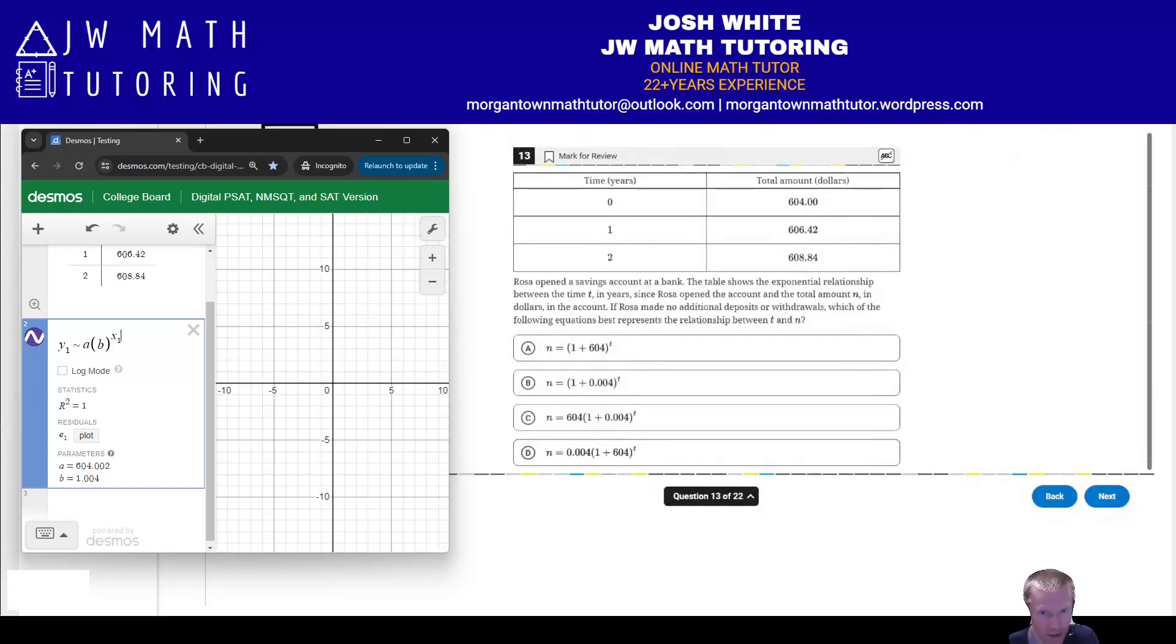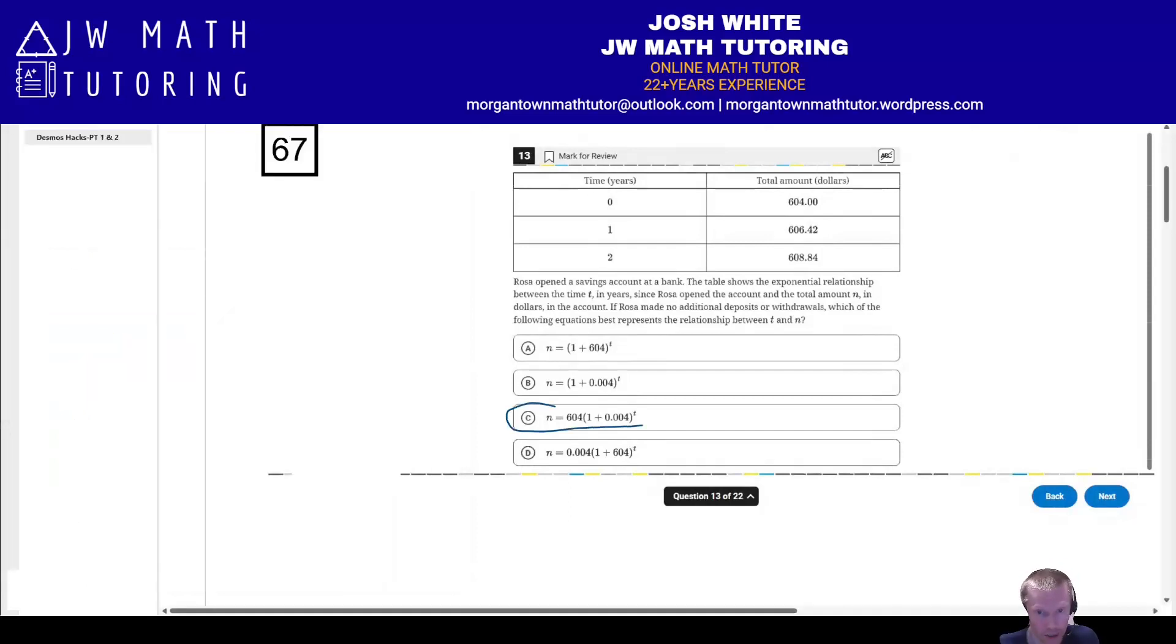It's obviously not exactly 604 because of some rounding with the answers. So that tells us right away that it's going to be answer choice C. And we can also confirm that the b value inside here, 1.004, inside the parentheses. So that also matches with answer choice C as well. That eliminates a and d. Technically b meets that criteria, but b doesn't have the 604 out front. So correct answer is just letter C, and that's it.